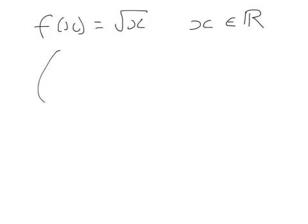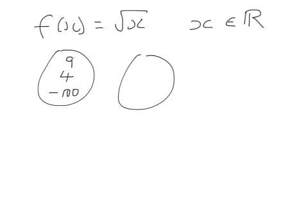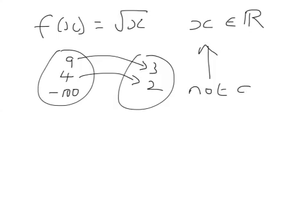Let's take the function, the positive square root of x, where x is any real number. Then if I take 9 or 4 or minus 100, then 9 maps onto 3, 4 maps onto 2, but minus 100 doesn't map onto anything, because if we've got the positive square root, then this has no, there's no element to map onto, so it's not a function.